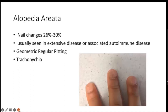If a child presents with an alopecia patch, we should examine the nails as well, since nail changes are commonly seen in alopecia areata. Nail findings in alopecia areata and psoriasis include deep pits, thick nails, and leukonychia.